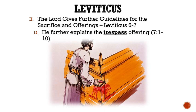Letter D: The Lord further explains the trespass offering. For this offering, the blood was to be sprinkled around the altar, and all the innards, including the rump, were to be burnt. The same guidelines for the sin offering applied to the trespass offering concerning each priest being able to eat the offering they laid on the altar, and no priest's direct offering for their own sin was to be eaten at all.